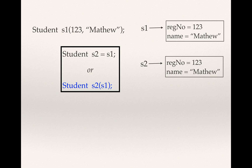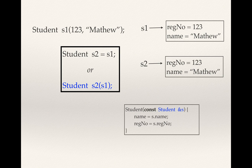Now we are going to see how we can define our own copy constructor instead of depending on the default one. Looking at the statement 'student s2(s1)', we need a constructor where s1 is received as an argument. The constructor parameter must be of type Student, and it must be a reference variable.